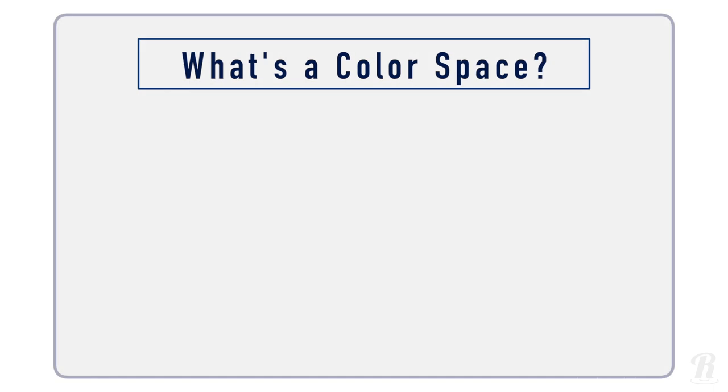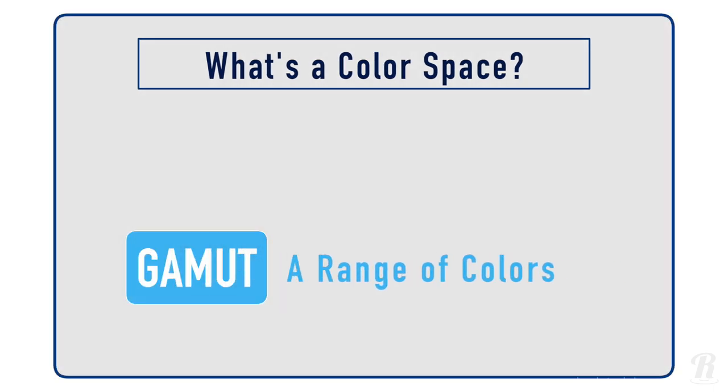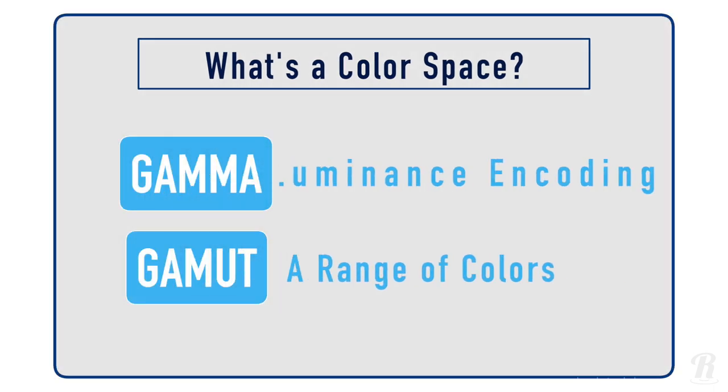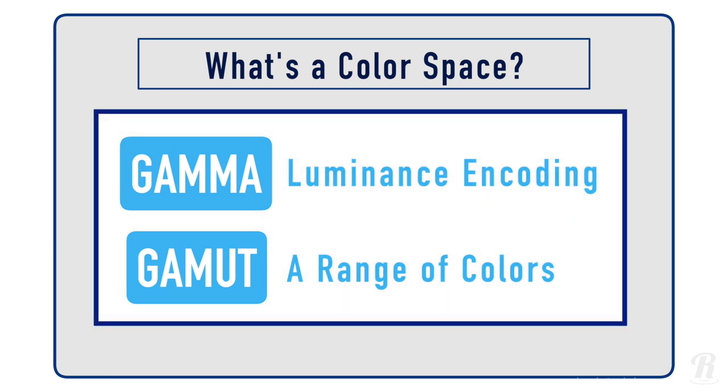Okay, so gamut is a range of colors, and gamma is how the brightness values of those colors get encoded. Together, gamut and gamma is all you need to define a color space. Whenever you hear the phrase color space, you should ask yourself, what's the gamut? And what's the gamma?